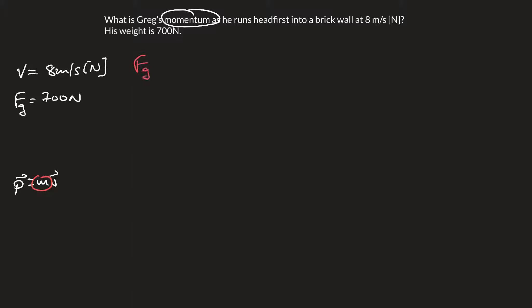We're going to do that by recalling that Fg equals mg, which means that m is Fg over g. So that leaves us with a mass of 700 newtons divided by 9.8 newtons per kilogram. So the student weighs 71.4 kilograms.